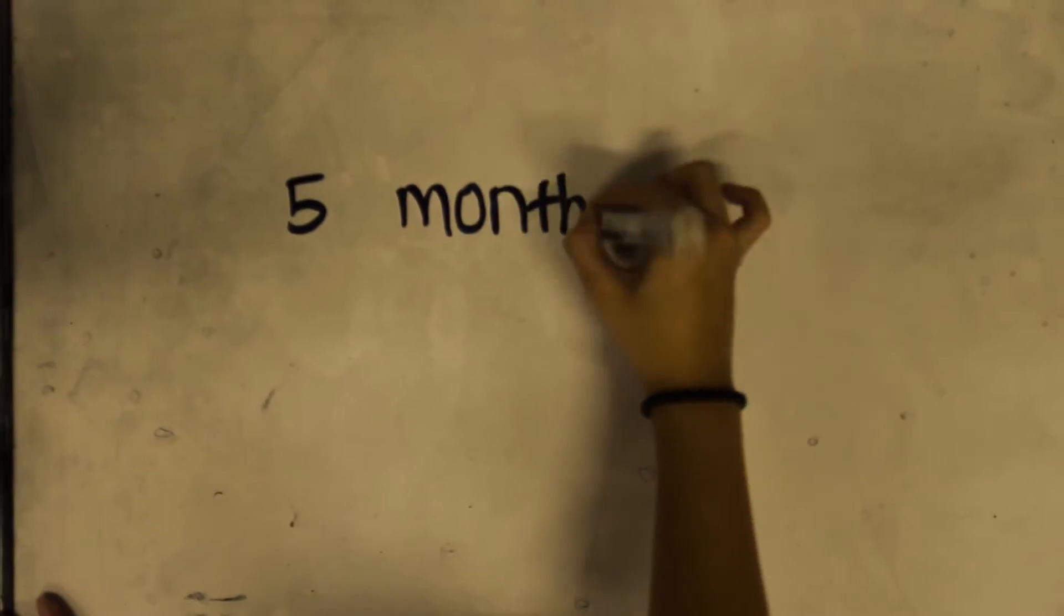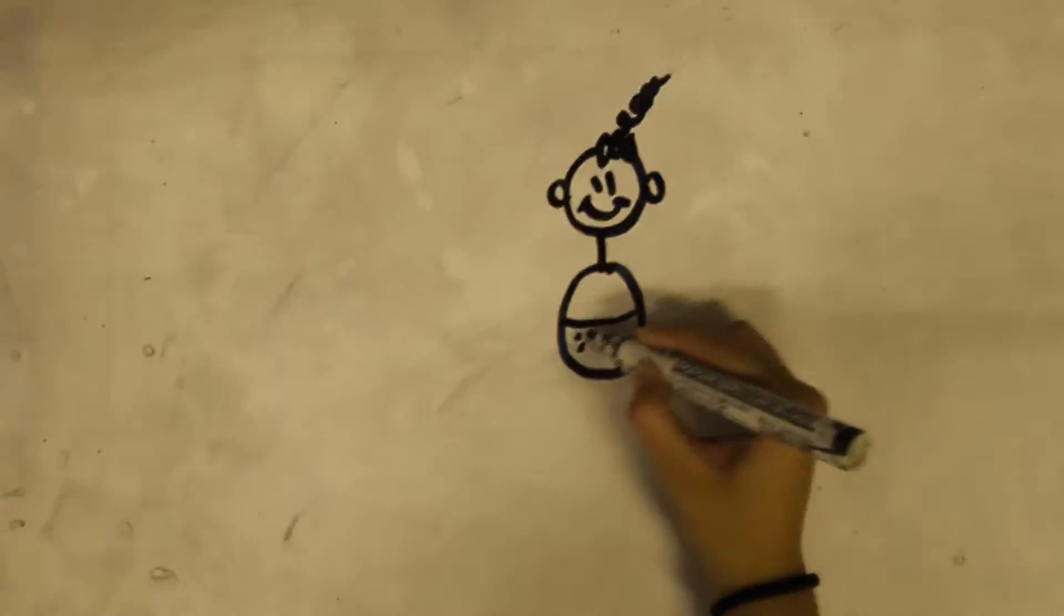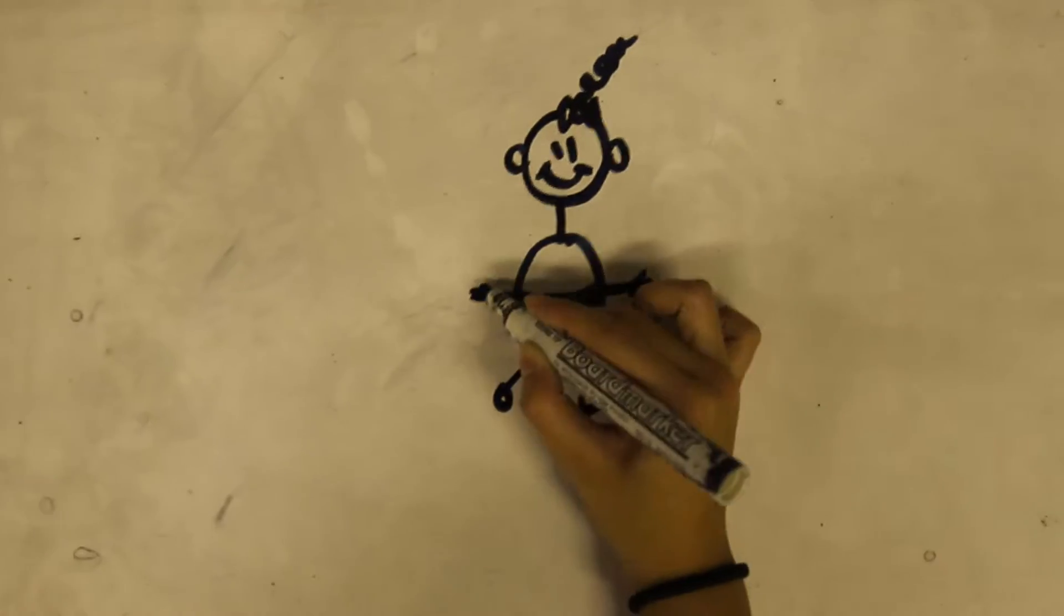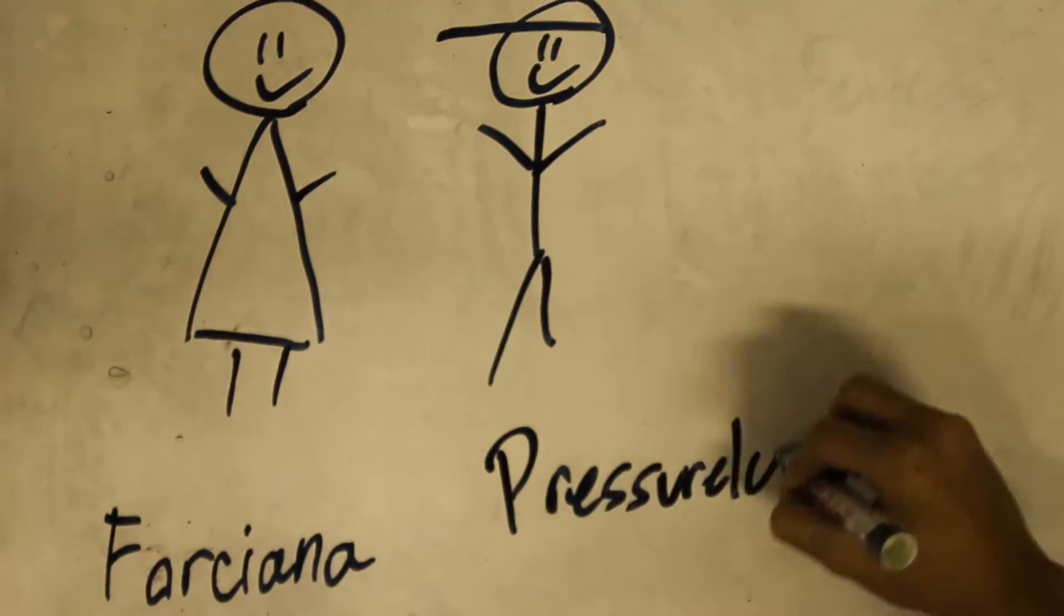Five months later, a baby girl was born. Her name is Forsyang. Five minutes later, a baby boy named Pressure Lee was born.